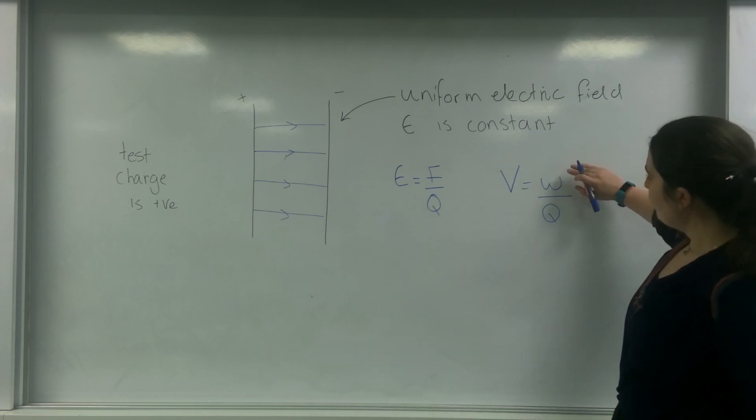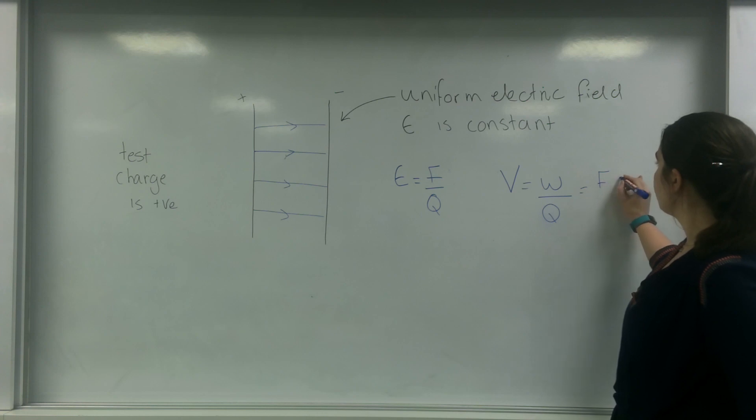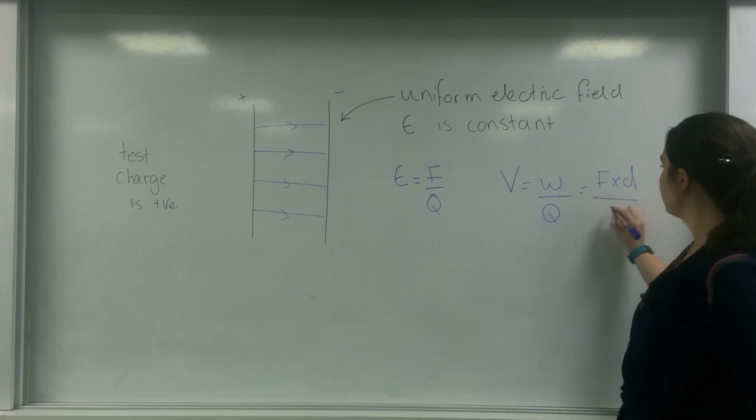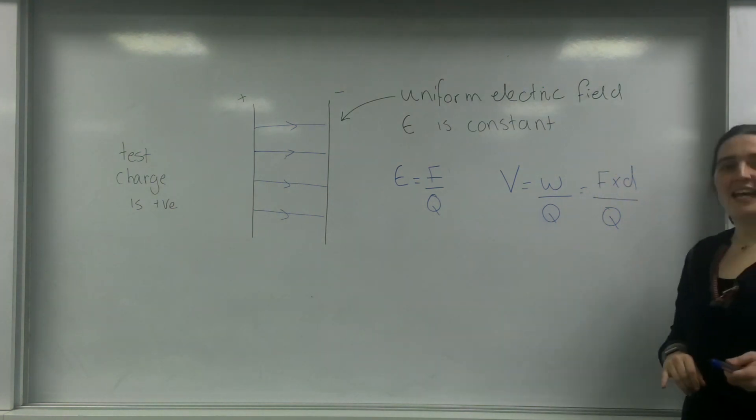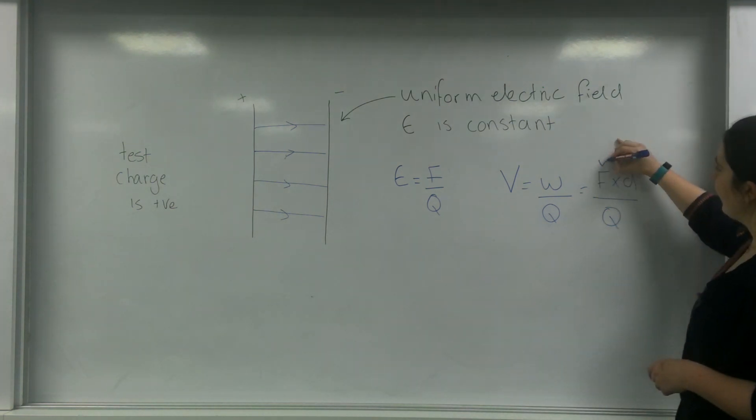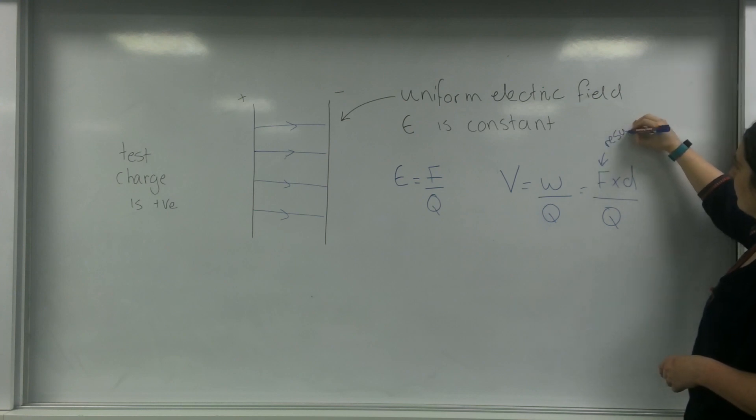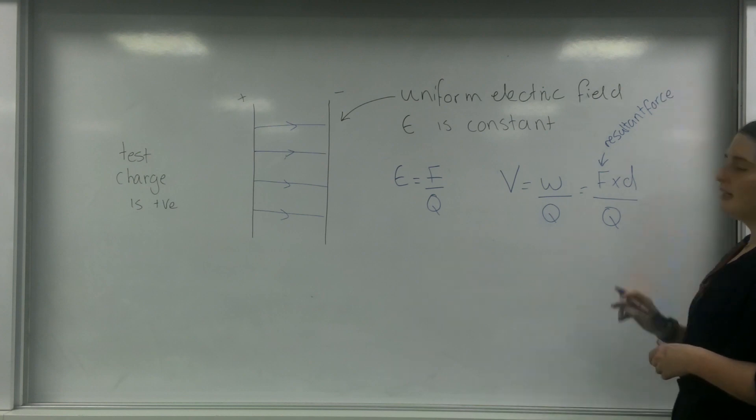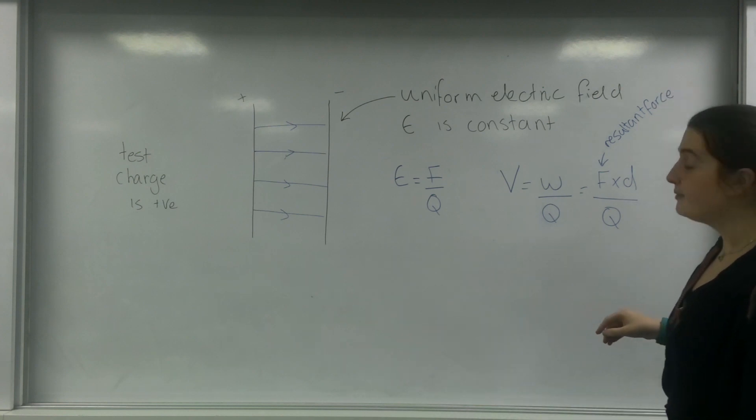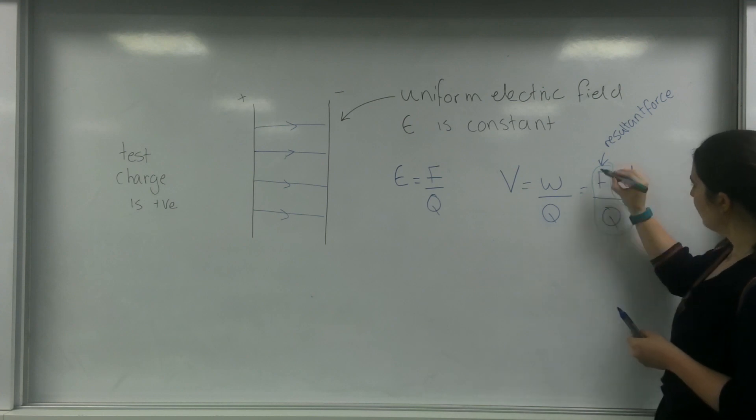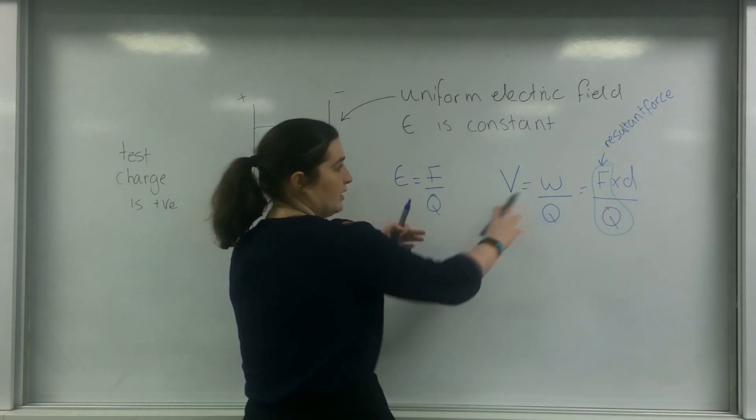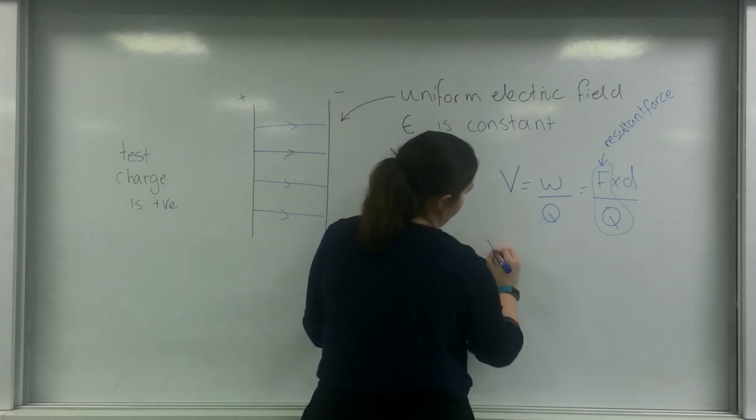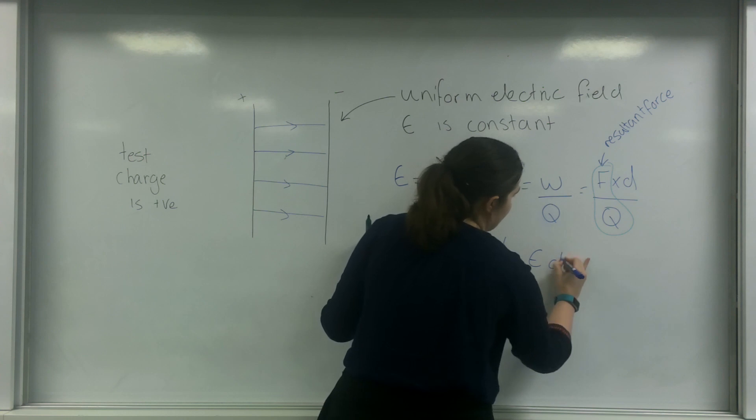This energy here, I'm going to replace with force times distance. Now this force here is the resultant force. And as you can see here, that there is my field strength. So I'm going to write the formula V equals E times D.